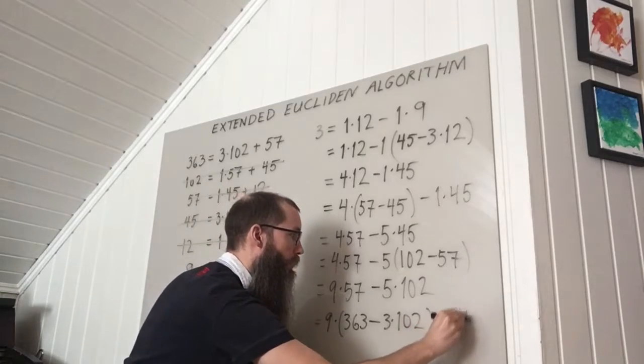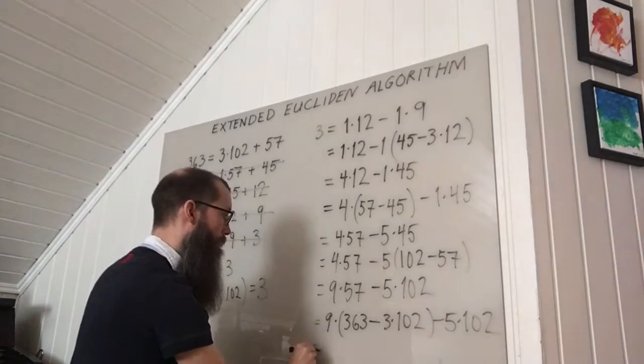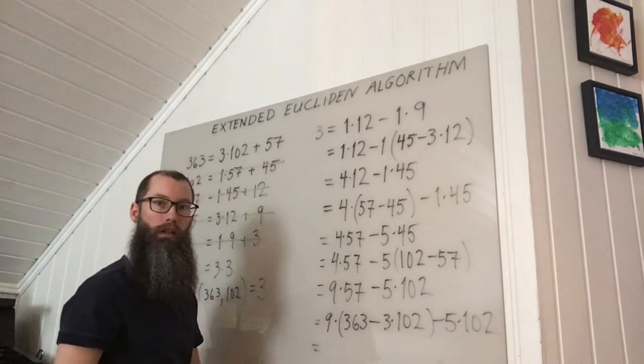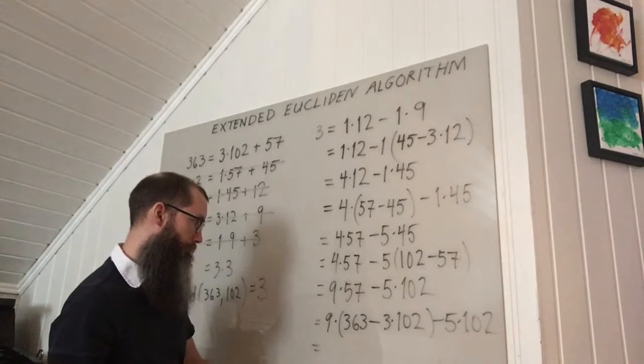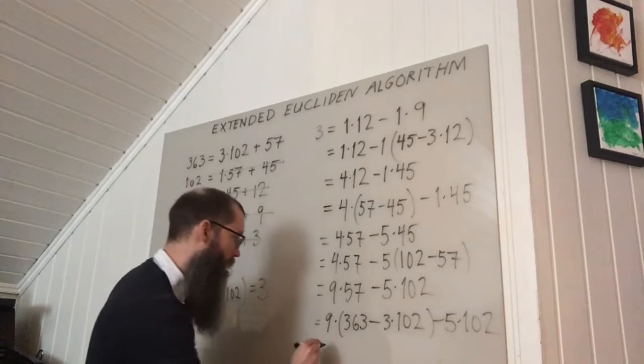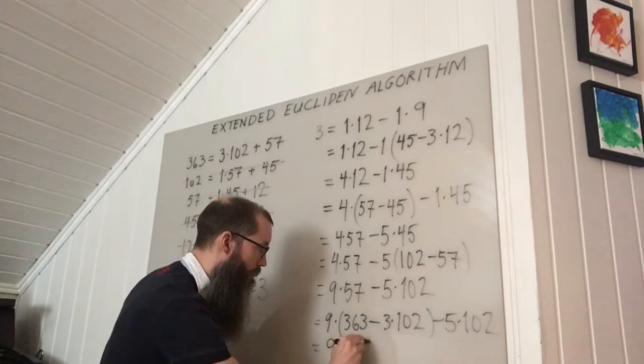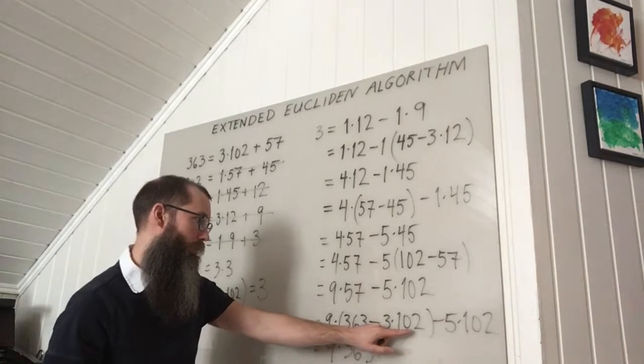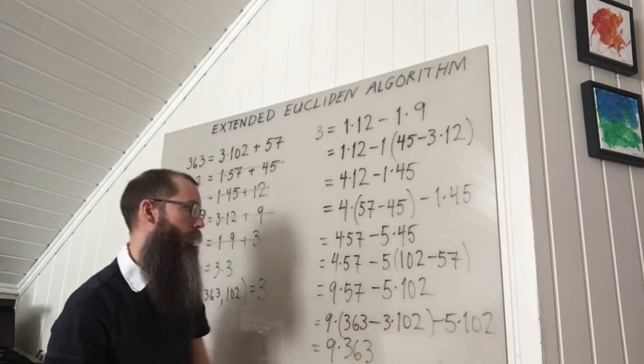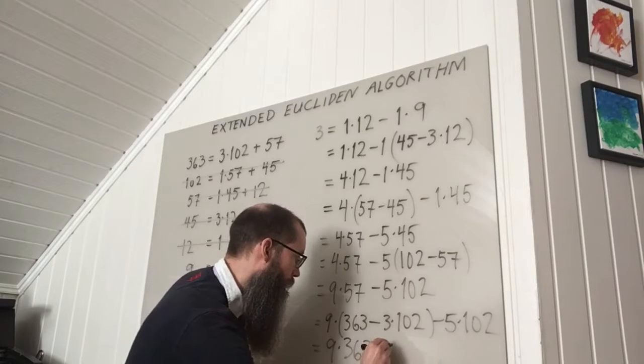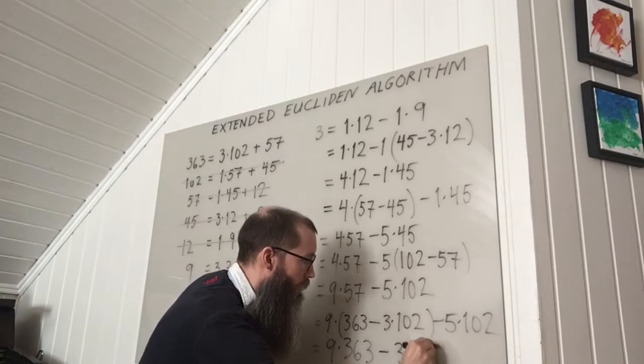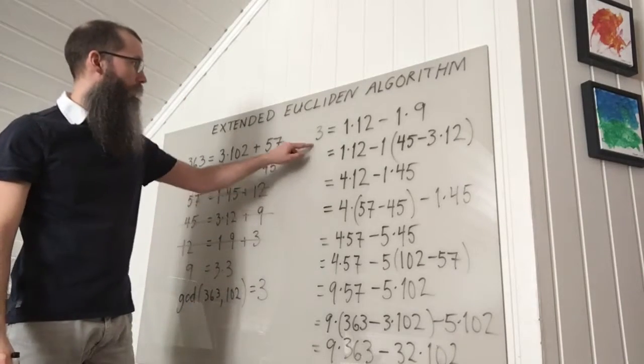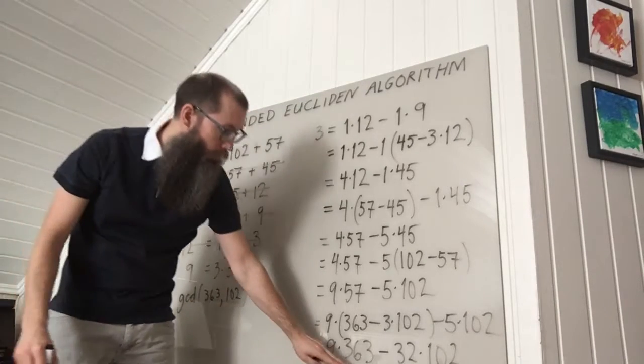And I have 5 102's from before. So in total I get 9 363's. And this is minus 27 102's minus 5. So in total minus 32 times 102.